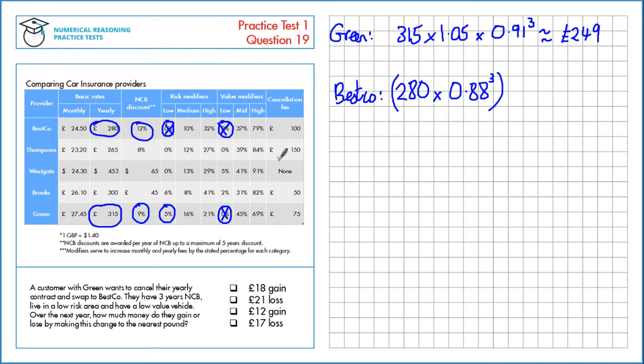But additionally we need to take into account this cancellation fee that they'll have to pay for Greens, that's £75. So we need to add on £75 to that value. That gives us approximately £266.